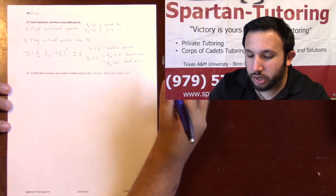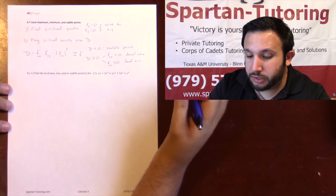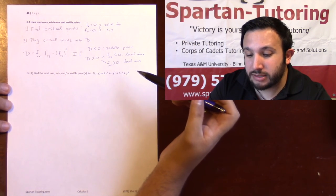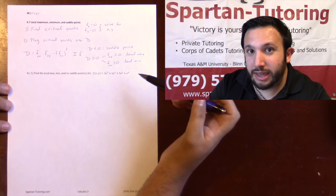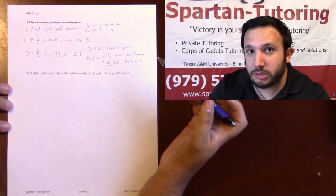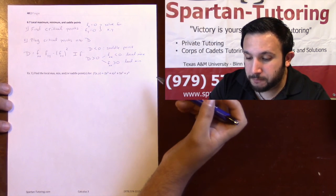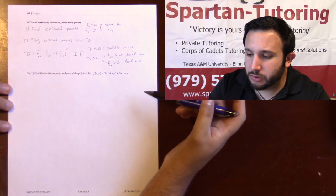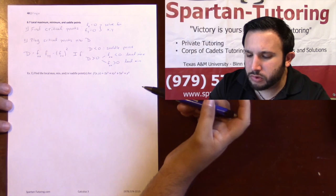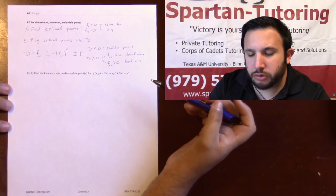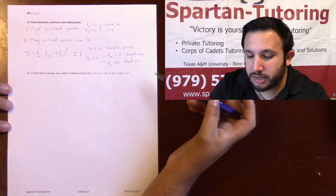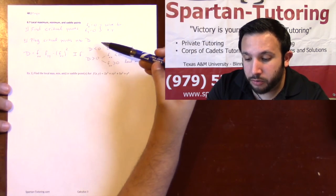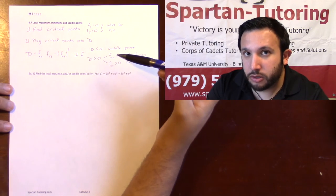In this video we're going to talk about how to find the local max, min, and saddle points for a three-dimensional function. Let's go through our steps — it's actually a pretty cool, straightforward two-step process. The first thing you're going to do is find your critical points.